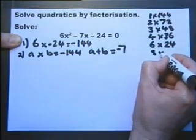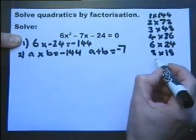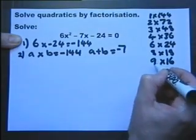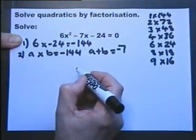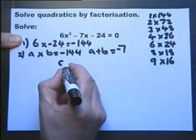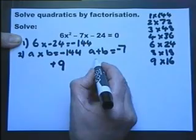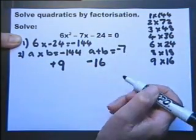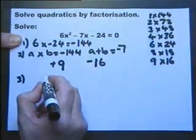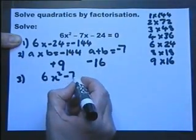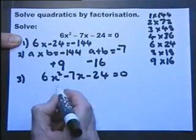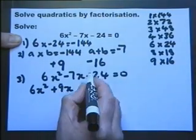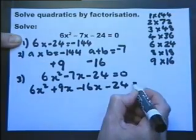8 times 18 is 144. 9 times 16 is 144, and 9 and 16 have a difference of 7. So as long as we make the 9 the positive value and the 16 the negative value, they multiply together to give me minus 144 and they add together to give me minus 7. Our step 3 is to take the equation and rewrite the minus 7x as plus 9x and minus 16x.